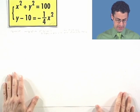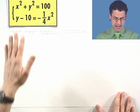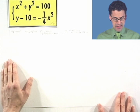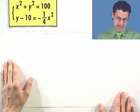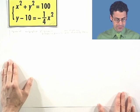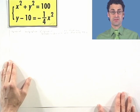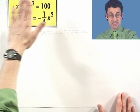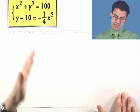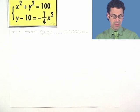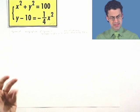Here's an interesting system. I've got x squared plus y squared equals 100, and y minus 10 equals negative 1 over 4 x squared. I want to find the solution to this system — the x and y values that satisfy both equations at the same time.